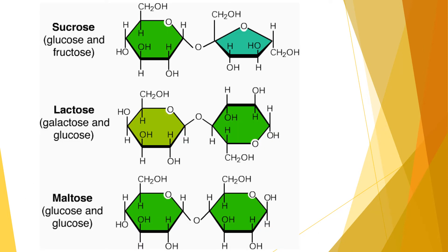Talking about the structure of disaccharides: sucrose is formed by fusion of glucose and fructose. Lactose is formed by the fusion of galactose and glucose. Maltose is formed by the fusion of glucose and glucose, so maltose contains two glucose molecules. In lactose there is a galactose and a glucose molecule, whereas in sucrose there is a glucose and fructose molecule.